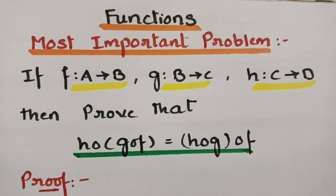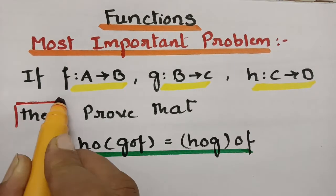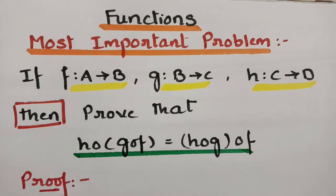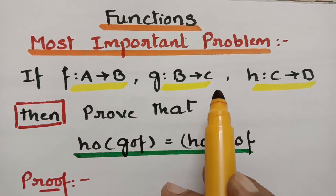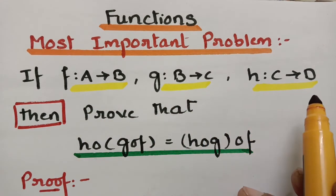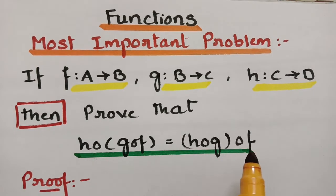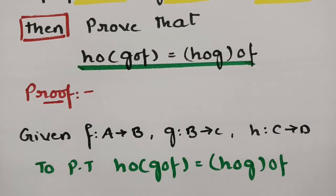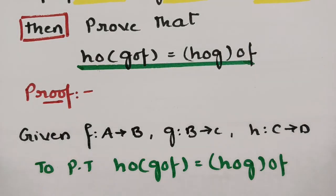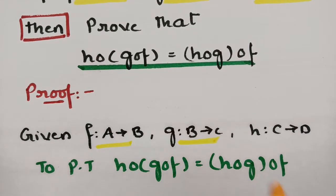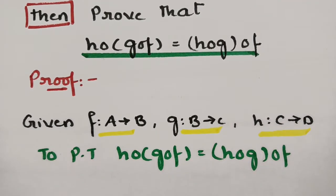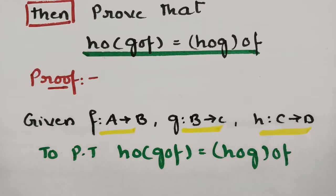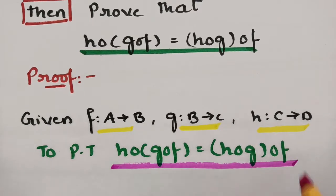In every theorem, there is vital importance for what is given and what we have to prove. Before the proof, what is given: F maps from A to B is a function, G maps from B to C is a function, H maps from C to D is a function. And we have to prove the composition H∘(G∘F) = (H∘G)∘F.